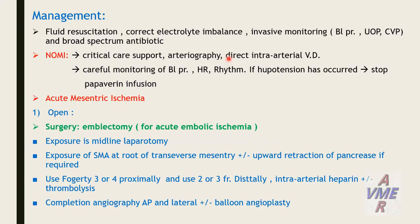Management of all cases with acute mesenteric ischemia requires fluid resuscitation, correction of electrolyte imbalance, invasive monitoring of blood pressure, urine output, central venous pressure, and broad-spectrum antibiotics. In case of non-occlusive mesenteric ischemia, critical supportive care, arteriography, and direct intra-arterial vasodilators are used. Careful monitoring of blood pressure; if hypotension occurs, stop the papaverine infusion. For acute mesenteric ischemia, open surgical intervention includes embolectomy for acute embolic ischemia.